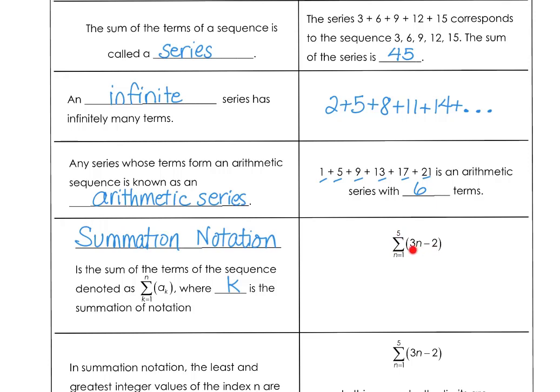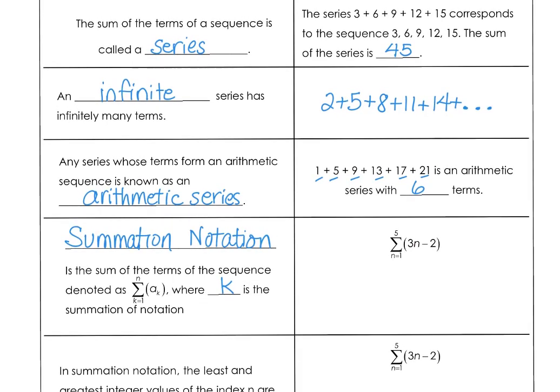We're going to follow the a sub k pattern or the sequence 3n minus 2. So substituting n equals 1, 3 times 1 minus 2 is 1. When n is 2, 3 times 2 minus 2 is 4. So we're adding 3 each time. If we go to the 5th term, we get 1, 4, 7, 10, 13. When we sum up that series, our sum is 35.